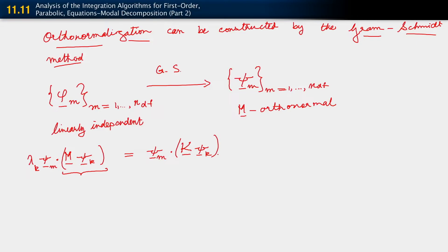So what we get on the right-hand side is psi m dot k psi k. When we look at this sort of product, now what we observe is that because we have this m orthonormal property for our orthonormalized set of eigenvectors, we have here lambda k delta m k on the left-hand side.